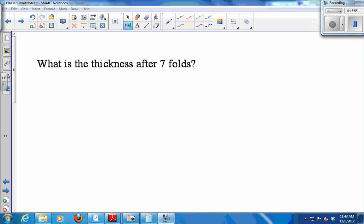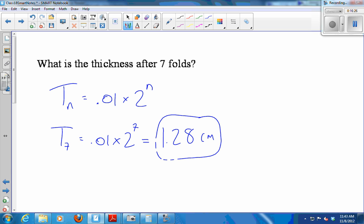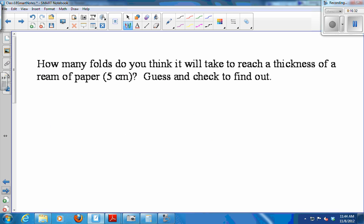So let's discuss some of these answers. The thickness after 7 folds. Well, I know that the thickness after n folds is 0.01 times 2 to the n. So if I want the thickness after 7 folds, I just make the n a 7. Thickness after 7 folds is 0.01 times 2 to the 7th, which comes out to what? 1.28 centimeters. So that's relatively small, right? Centimeters like that.